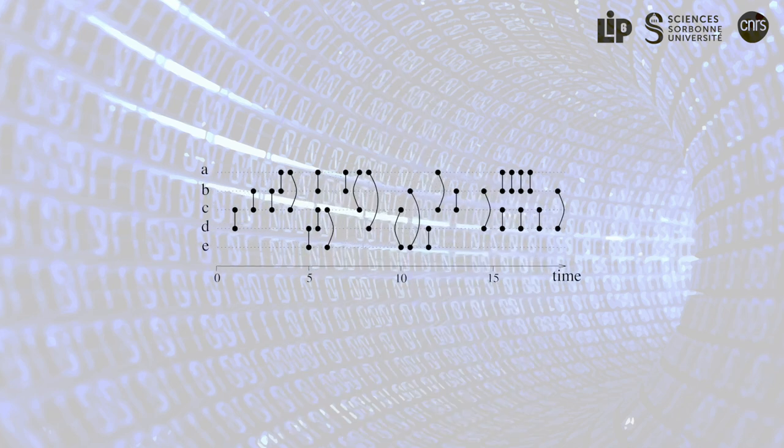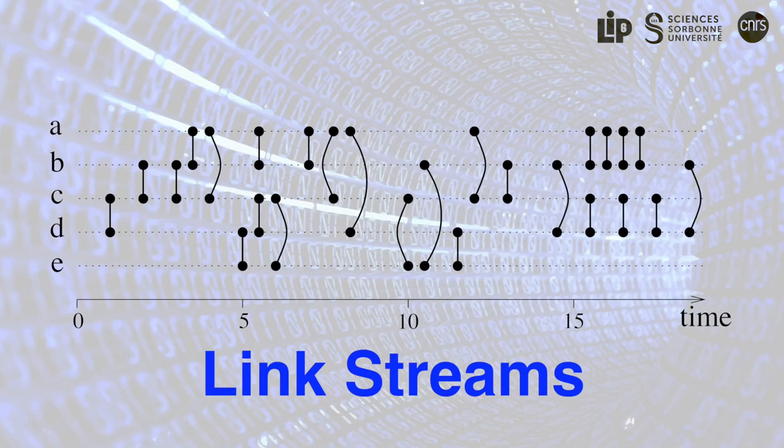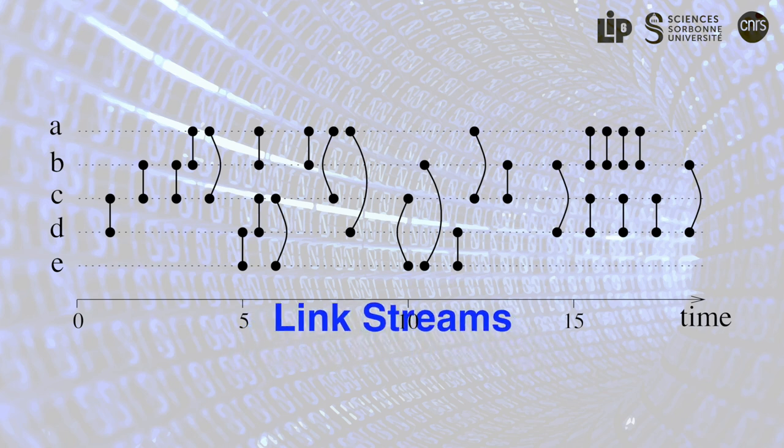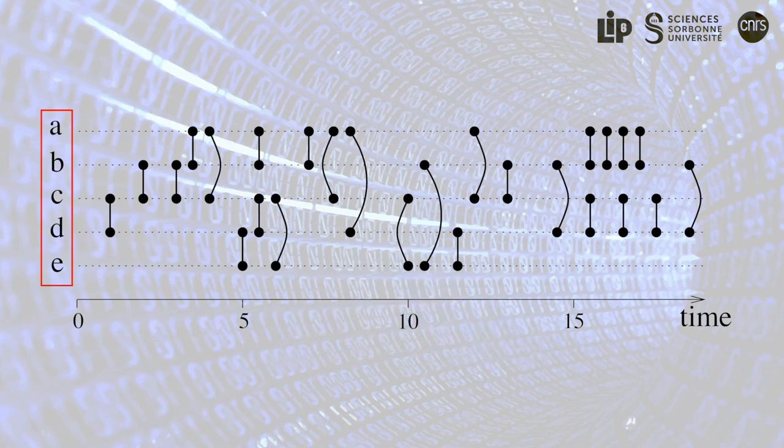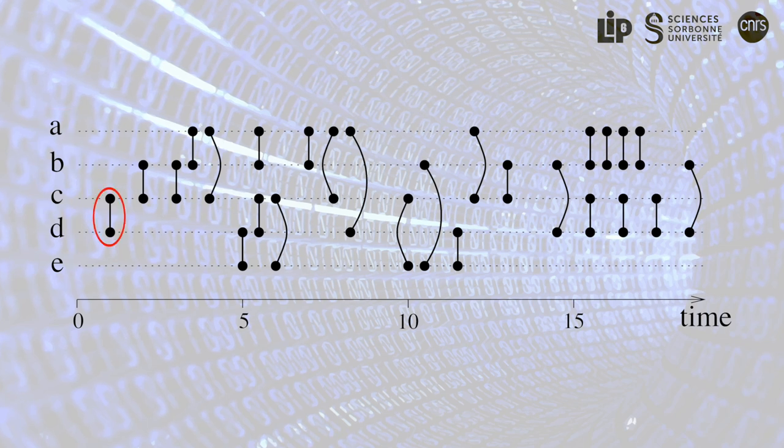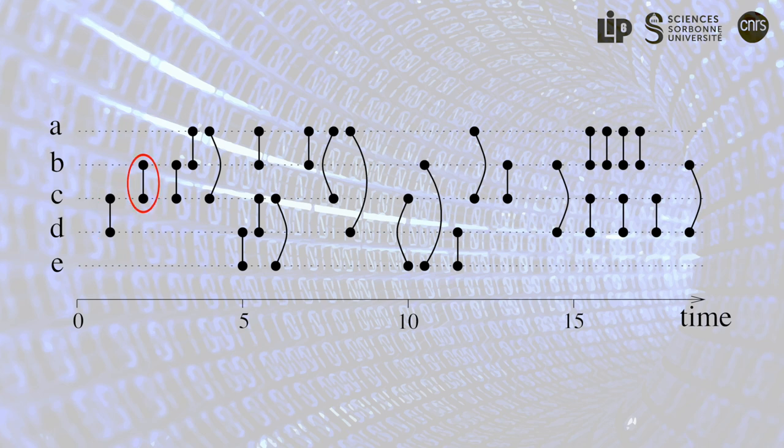In this fight, objects like this one, that I call Link Streams, play a key role. In such a Link Stream, we observe links between nodes over time. Here, for instance, the nodes are A, B, C, D, E, and a link occurs between C and D at time 1, between B and C at time 2, and so on.